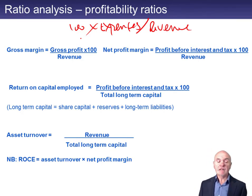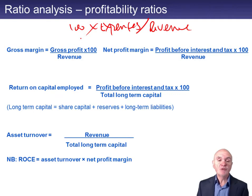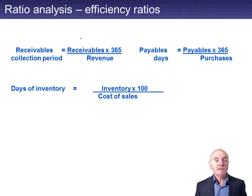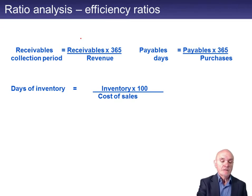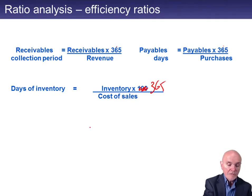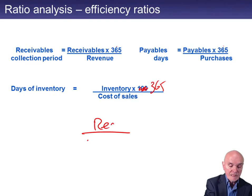Some people do asset turnover, though I never get too excited about it. It's really saying how many dollars worth of revenue do you generate per dollar worth of asset — how hard are you working the assets? For efficiency ratios, really dealing with payables, receivables and inventory. For the receivables collection period, think of it as receivables over revenue per day — times 365. How many days worth of revenue are in receivables? It comes back to exactly that.